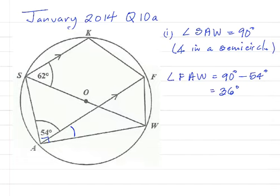Then we are asked to find angle SKF — that's this angle here. It's also not difficult to determine because ASKF is a cyclic quadrilateral.